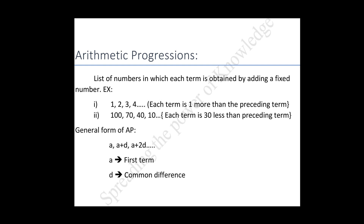Let the first term of an arithmetic progression be a1, second term a2, then the nth term be aₙ, and the common difference be d. Then the arithmetic progression becomes a1, a2, a3, up to aₙ. So, a2 minus a1 equals a3 minus a2, and so on, up to aₙ minus aₙ₋₁, which equals d.